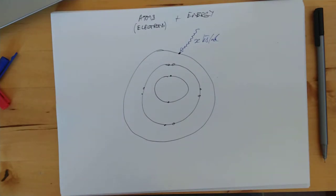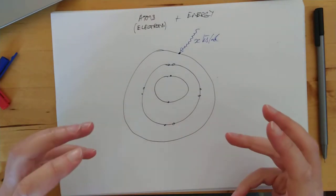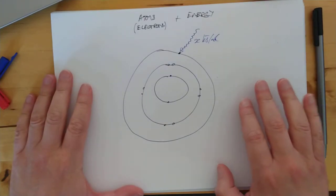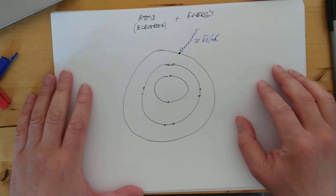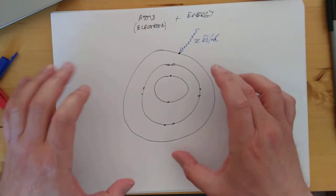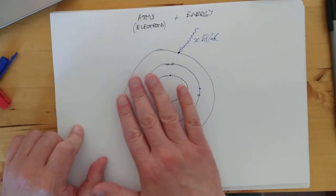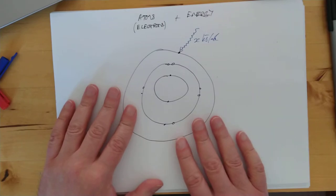Well, the quick answer to that is the electrons absorb that energy and get promoted to a higher energy level themselves. The next logical question from you would probably be, what's an energy level then? Is it like a bigger circle?